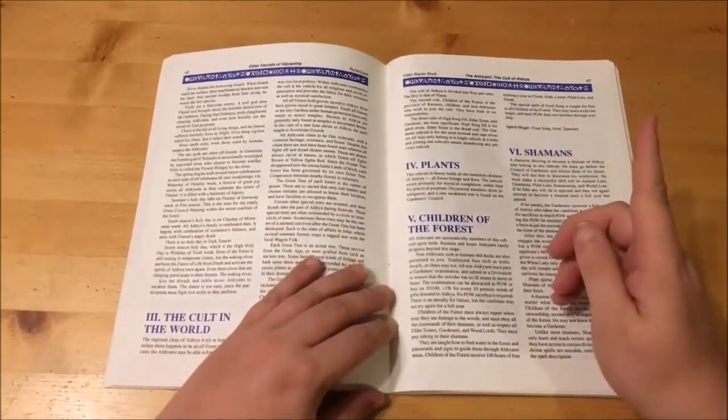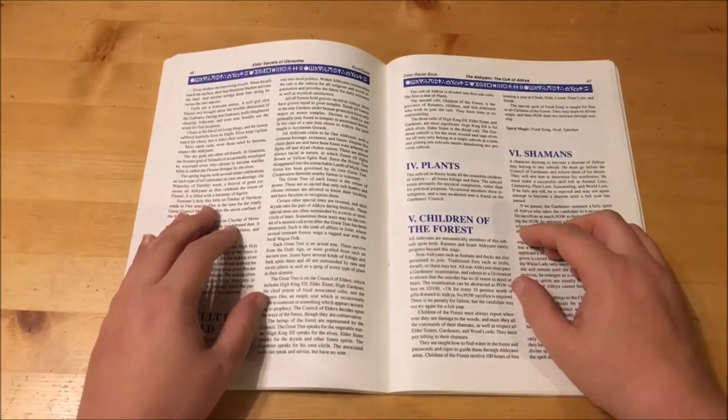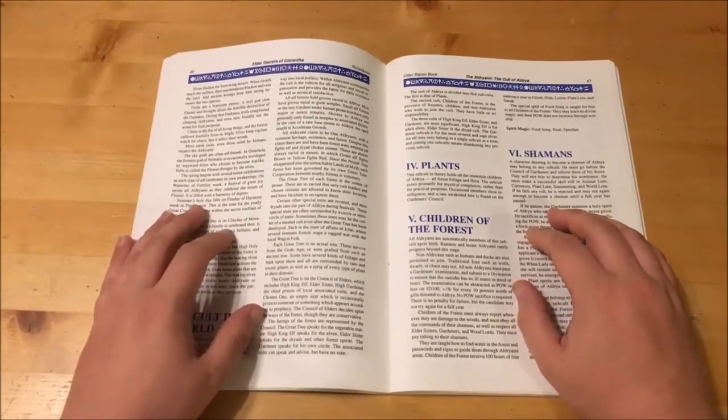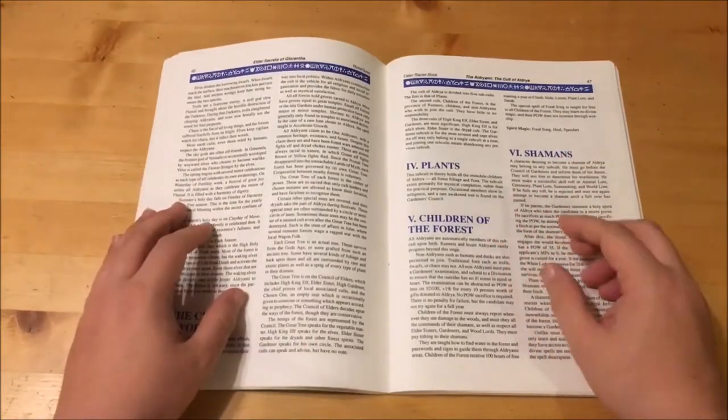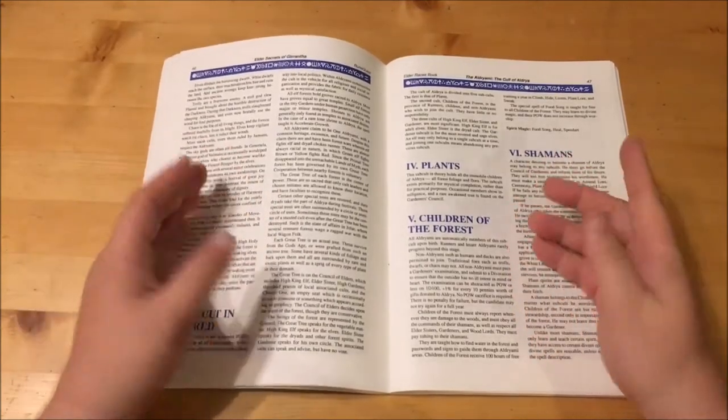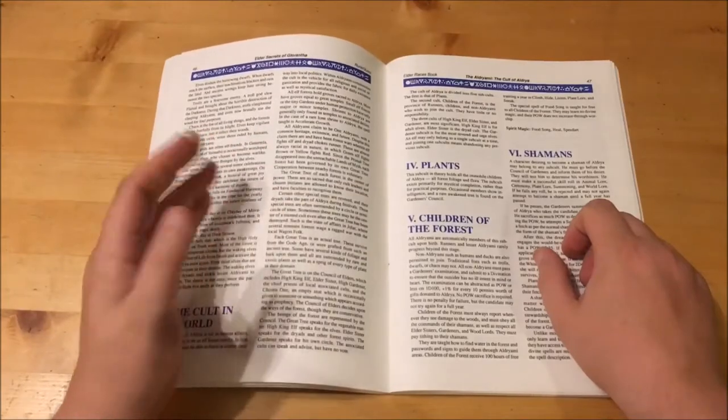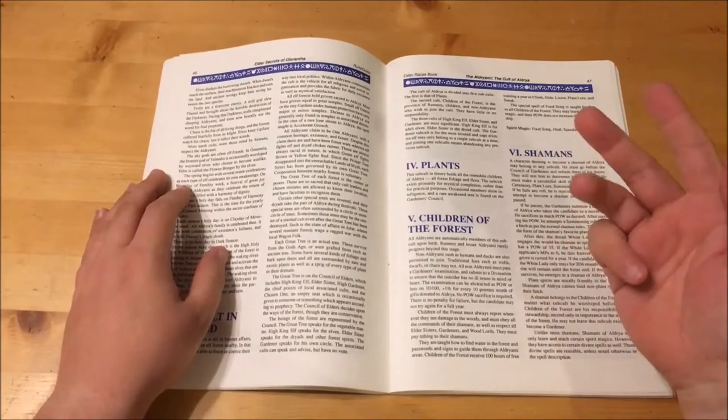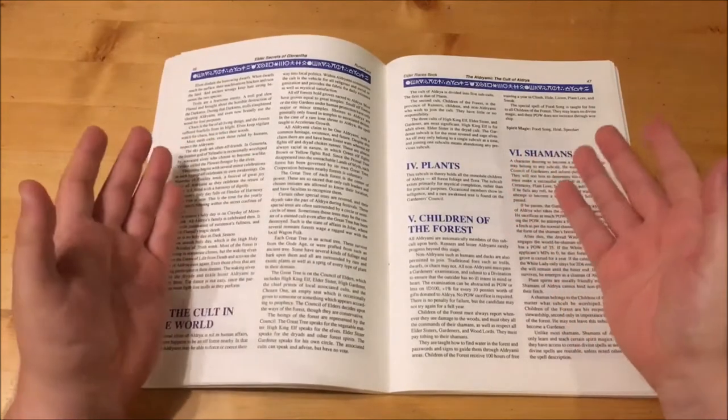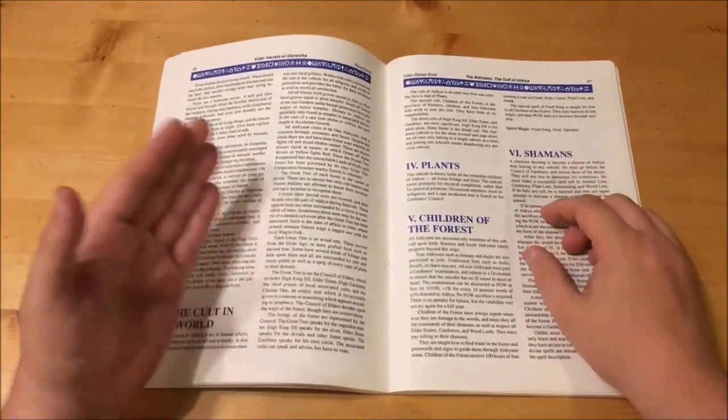The Cult of Aldraiia focuses on the plant rune, but it is modified by the earth and life runes. Aldraiia is the ancestral goddess of sentient and non-sentient Aldreiai Army and is sometimes worshipped by humans. Elves are staunch foes of chaos as it is the enemy of all living things. Most earth cults respect the Aldreiai Army and the sky gods are considered elf friends. Yelmalio and Yelm are also worshipped by the elves. Aldraiia is worshipped in the forest in groves. Although all Aldreiai Army consider themselves to be one race, they have fought each other at times. Each forest is governed by its own great tree and these are held so sacred that only cult leaders and chosen initiates are told the location. Each great tree is an actual tree that survived since the gods age or were grafted from such a tree. The great tree will sit upon the council of elders along with the high elf king, elder sister and high gardener as well as the local chief priest of associated cults. And the usually empty seat of the chosen one. The high elf king represents the elves, the elder sister the dryads and the high gardener the elder sage elves. The great tree represents all plant life.